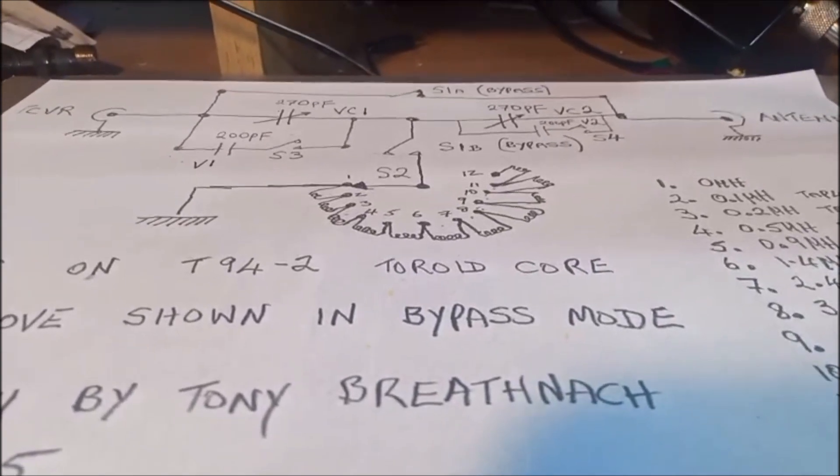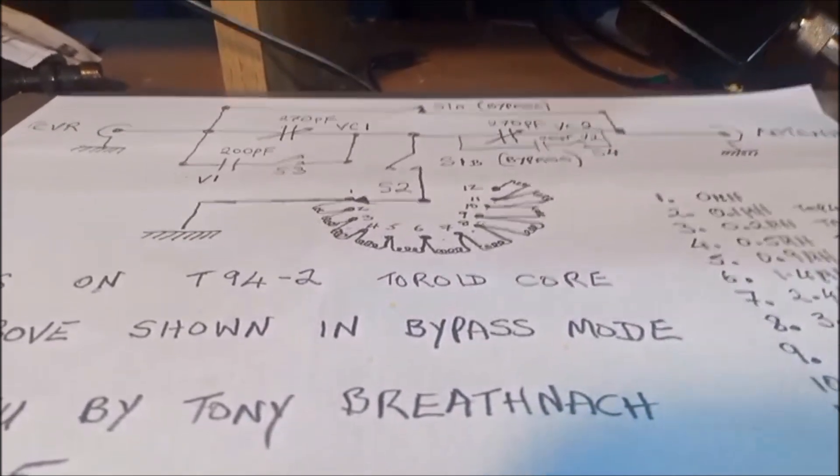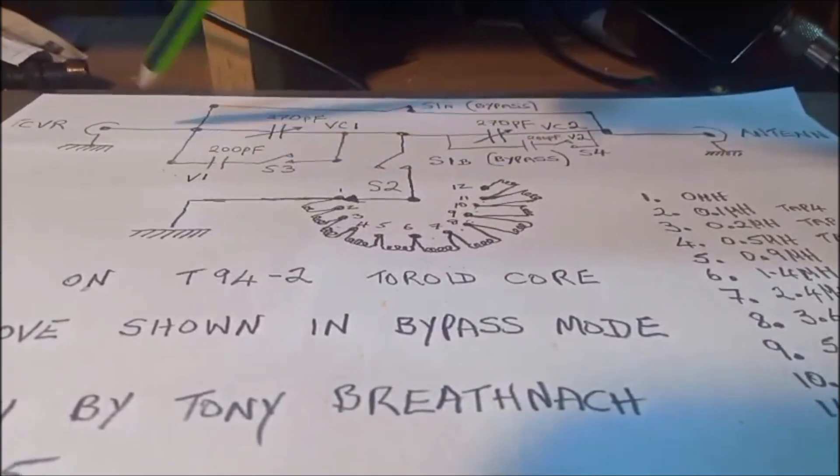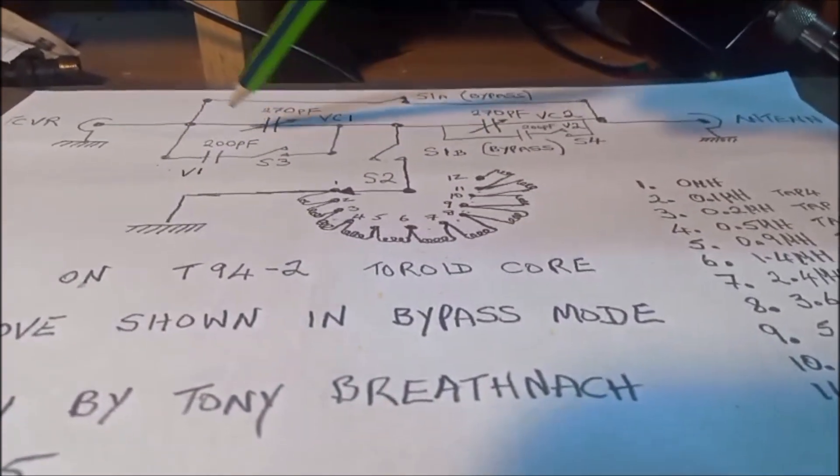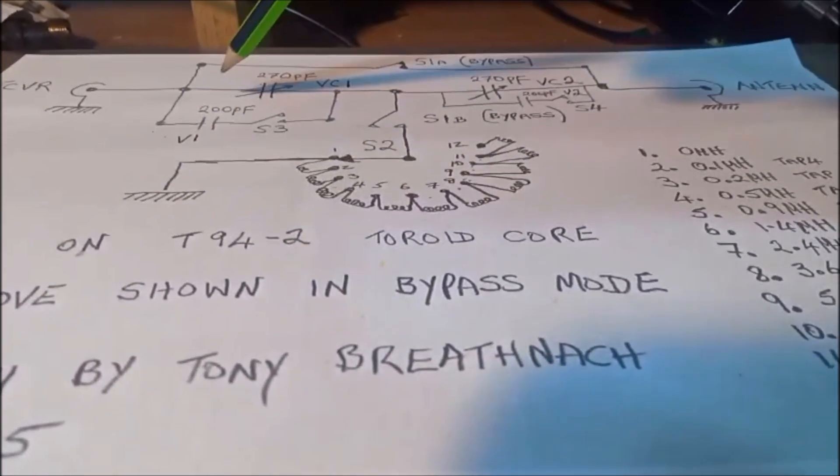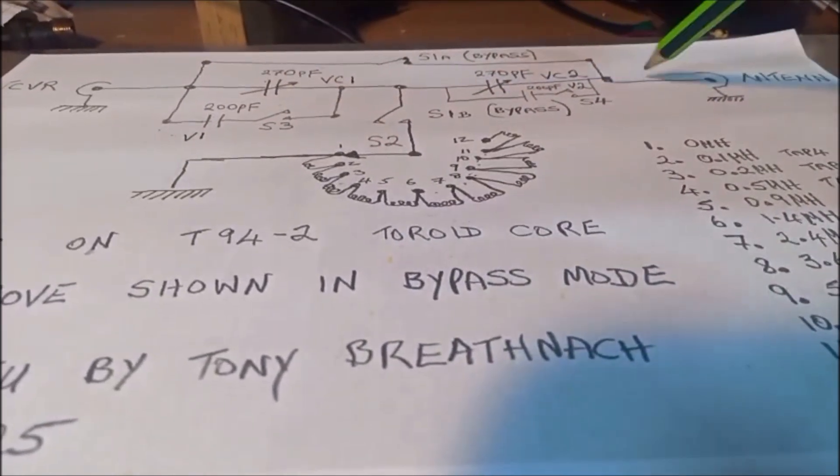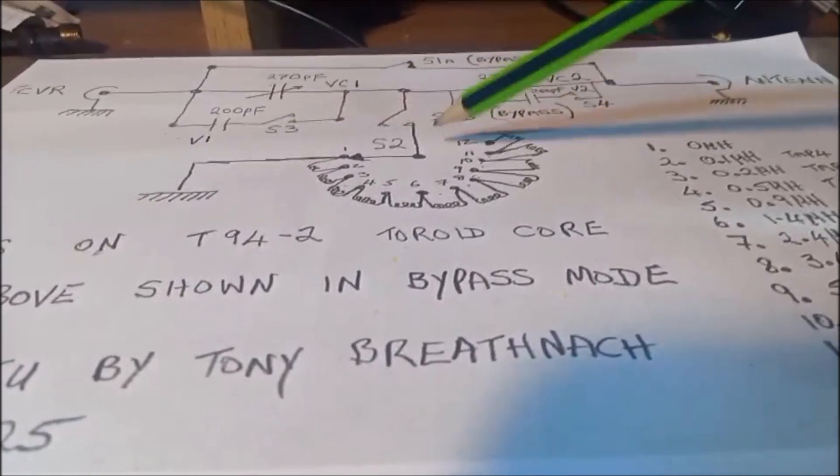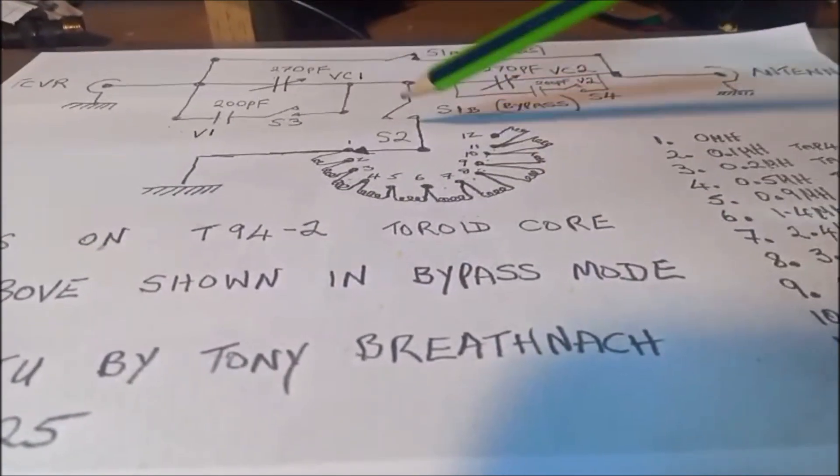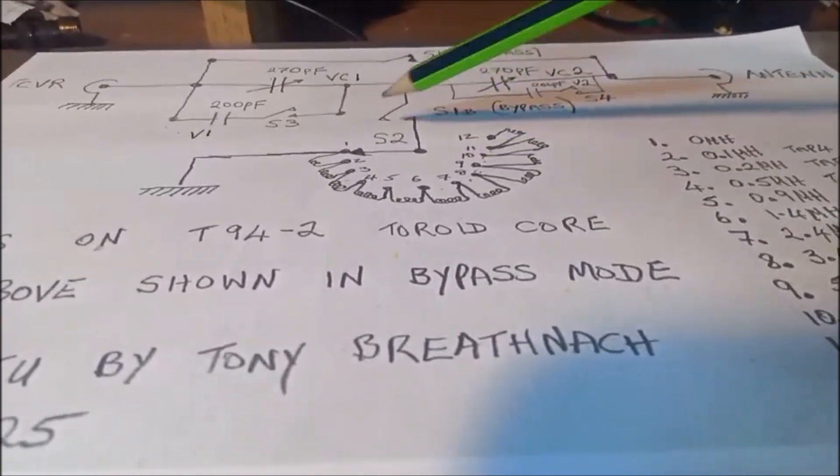So when not in bypass mode, the transceiver, the signal from the output from the transceiver will go through the capacitive setup here and down through the upright of the T because this switch here will be closed.